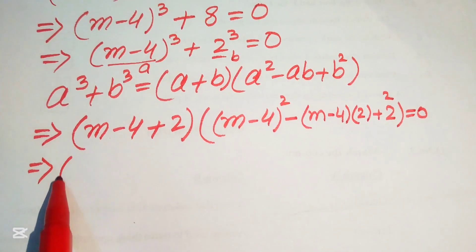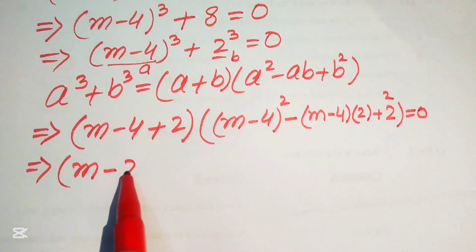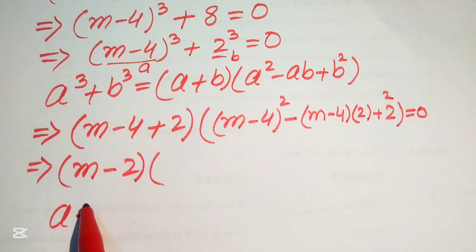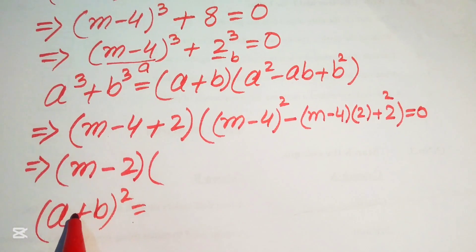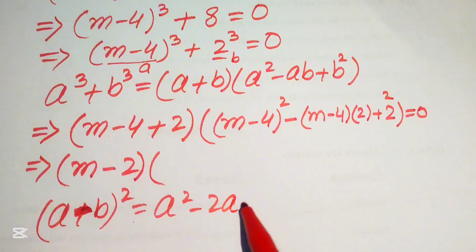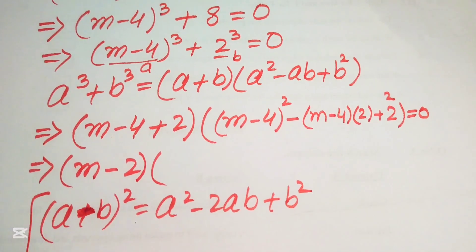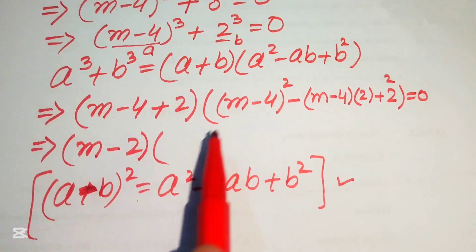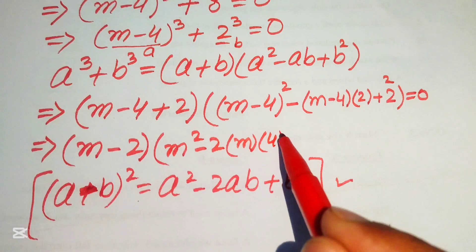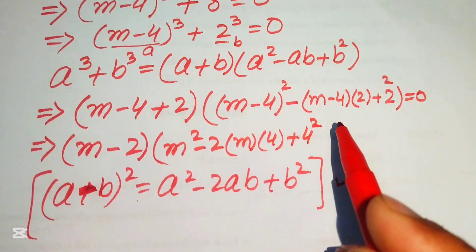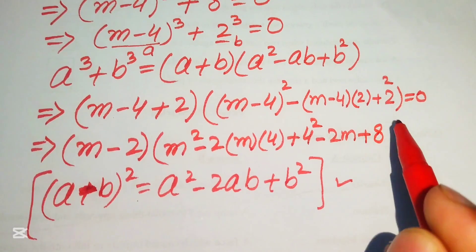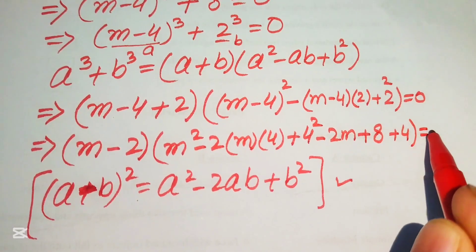Simplifying, M - 4 + 2 becomes (M - 2). We now expand (M - 4)² using the identity (a - b)² = a² - 2ab + b², which gives M² - 2(M)(4) + 4² = M² - 8M + 16. Multiplying out the -2 term gives -2M + 8, and 2² = 4, so the second factor becomes M² - 8M + 16 - 2M + 8 + 4 = 0.